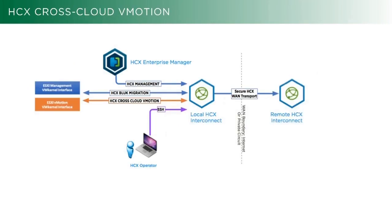This is HCX cross-cloud vMotion, where we are actually live migrating or scheduled migrating machines. The disks and everything are replicated through the tunnel that the HCX interconnect creates. This comes through on the remote side and is then written out to the vSAN on the SDDC, and re-instantiated when you either go into a DR scenario or if you do a migration.